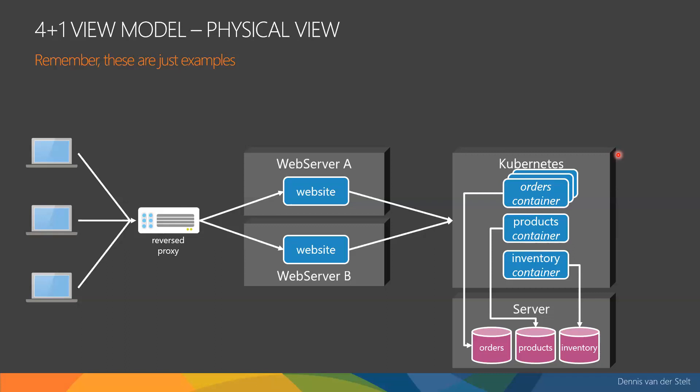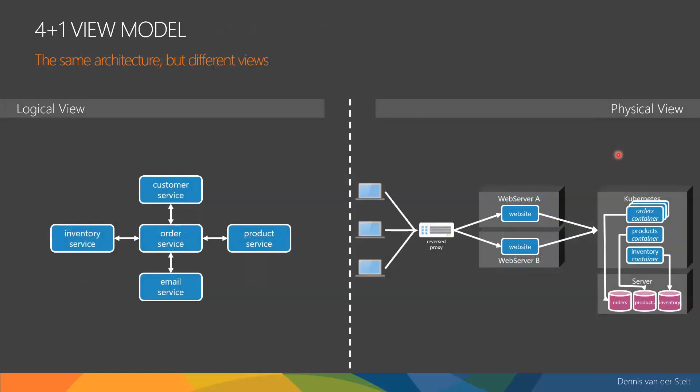Here you can see the logical and the physical view next to each other. On the left we had those five components, and on the right you can see the physical view. I want to do this a few more times to see how we can compare the logical and the physical view, because this is where you take the logical view and then create code, and at some point deploy. I want to use some examples on how you can change your architecture from the logical to the physical view.